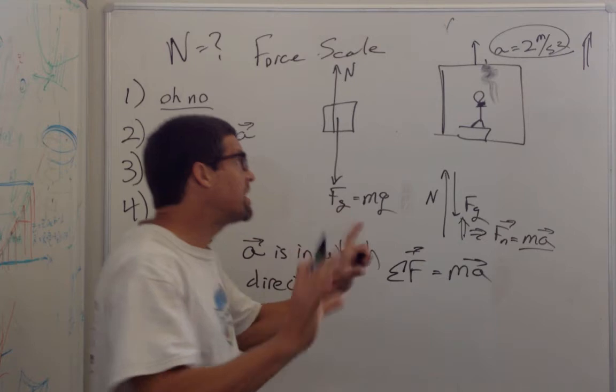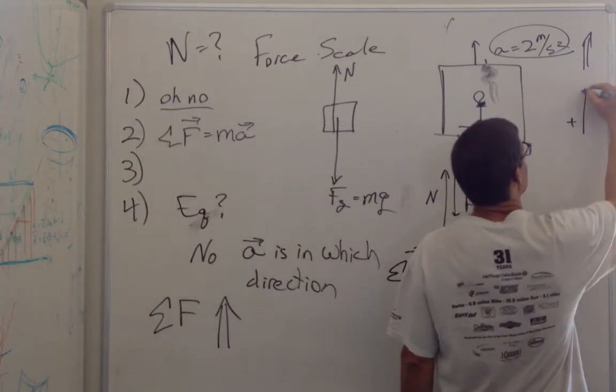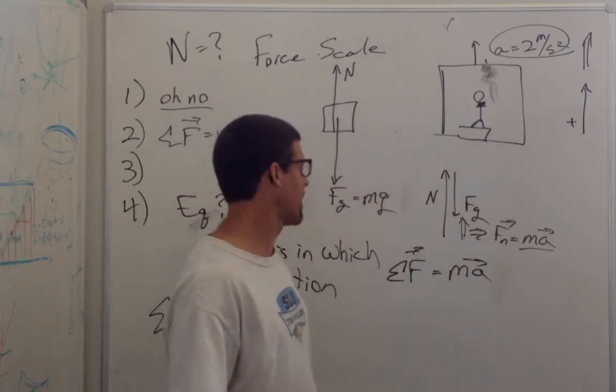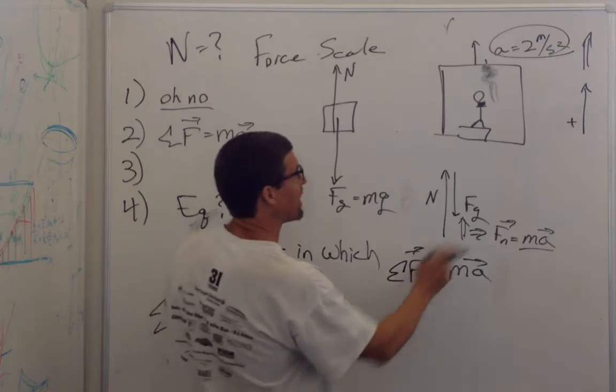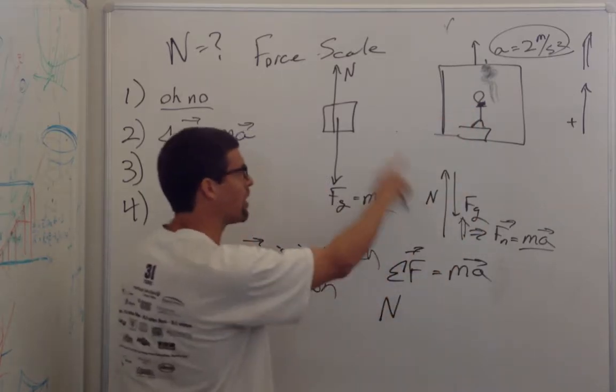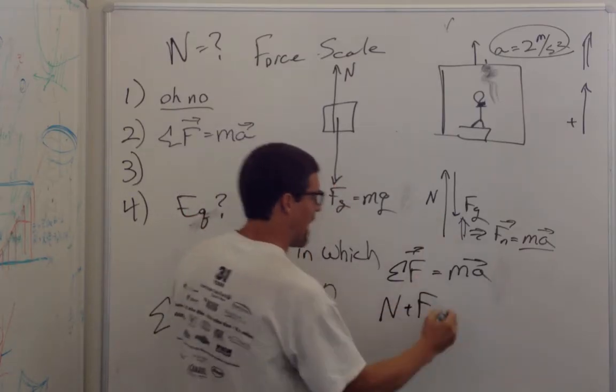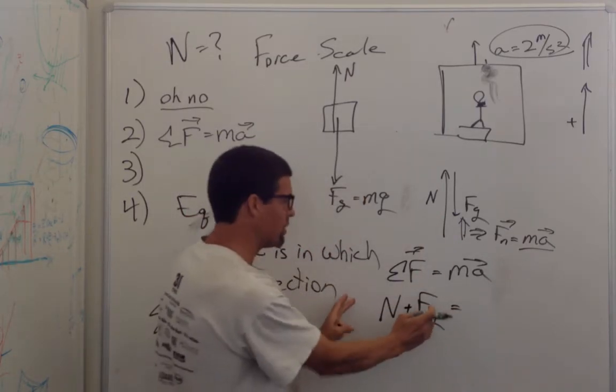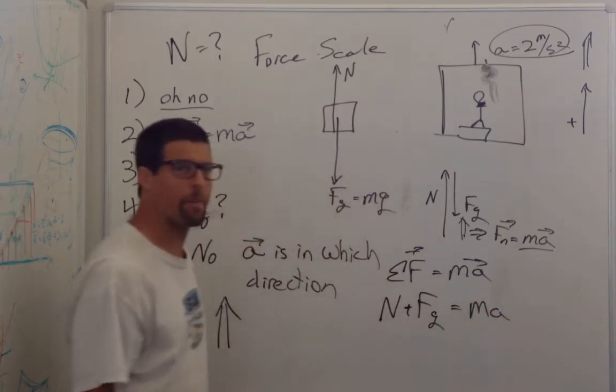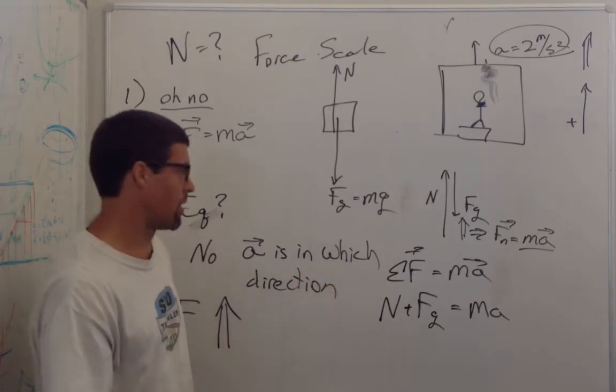Then what we can do is write the vector sum of the forces equals mass times acceleration. Now, this is where we choose our preferred axis. I'm going to choose this is the positive y direction or the positive direction because we're not moving in this direction. And so the vector sum of the forces are the normal force and the force of gravity, and that's equal to mass times acceleration.